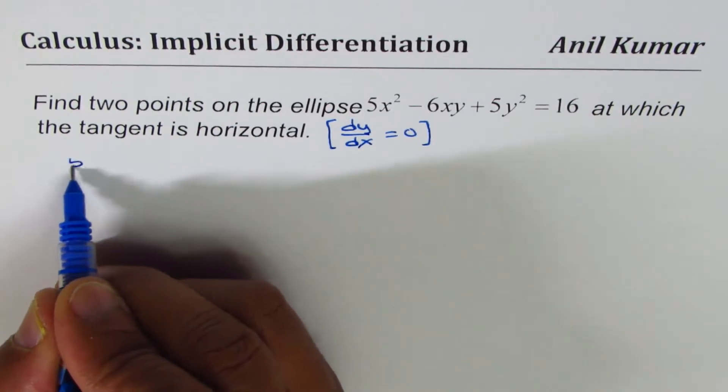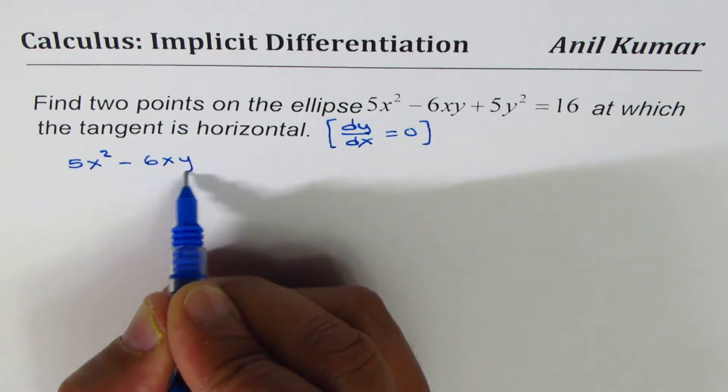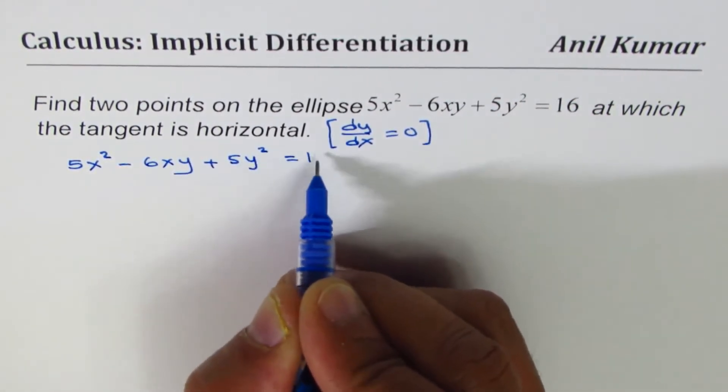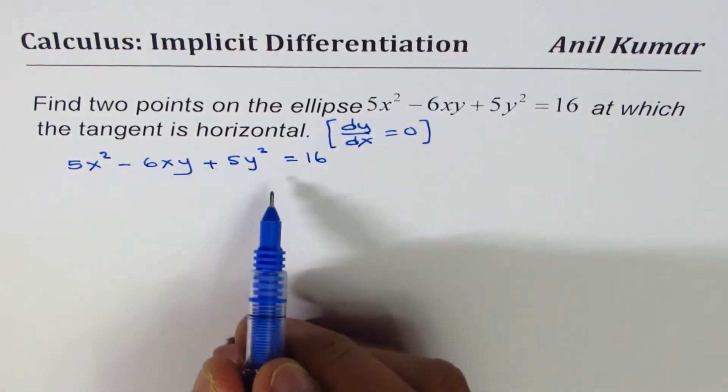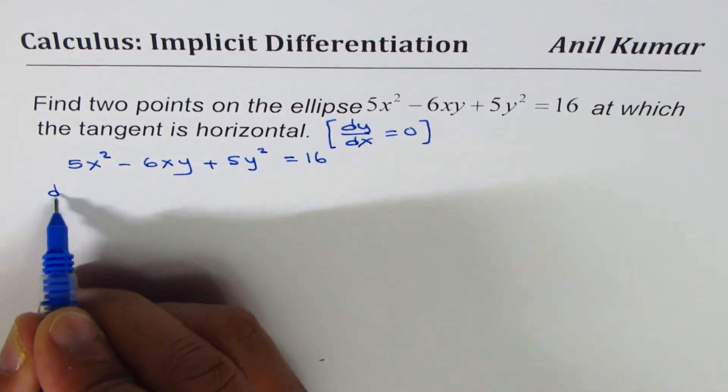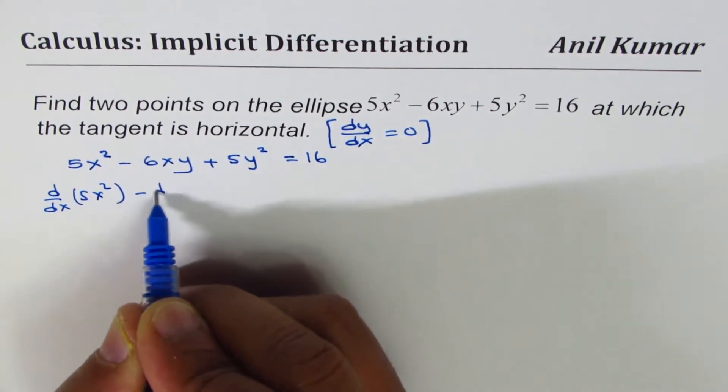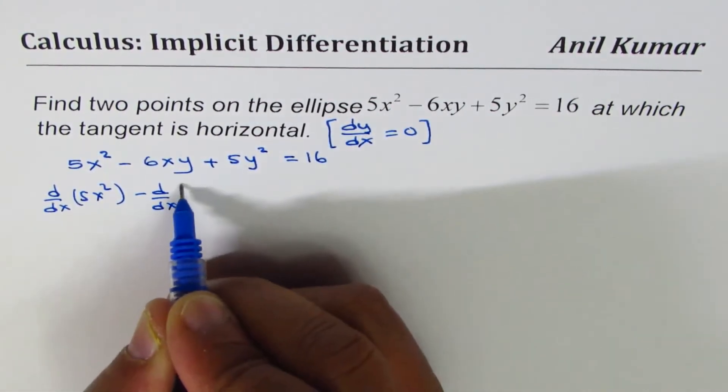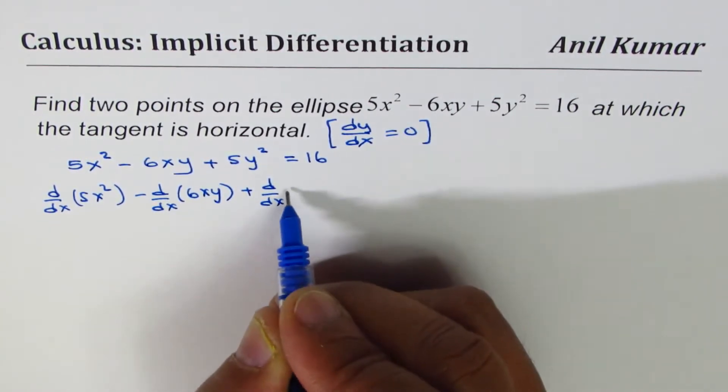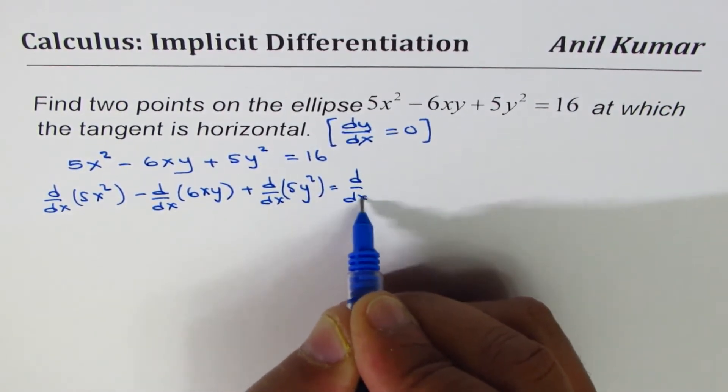Let me rewrite the question here. It is 5x² - 6xy + 5y² = 16. Differentiating both sides with respect to x, we get d/dx of 5x² minus d/dx of 6xy plus d/dx of 5y² equals to d/dx of 16.